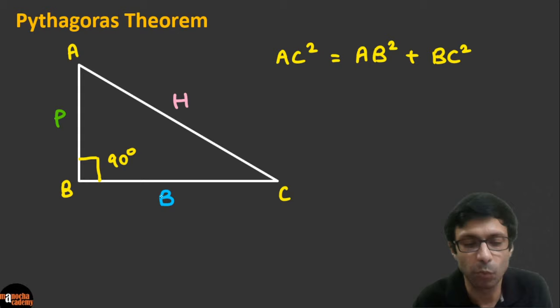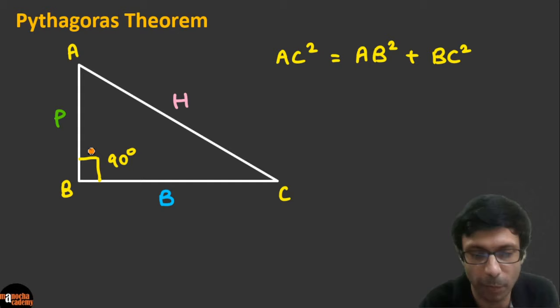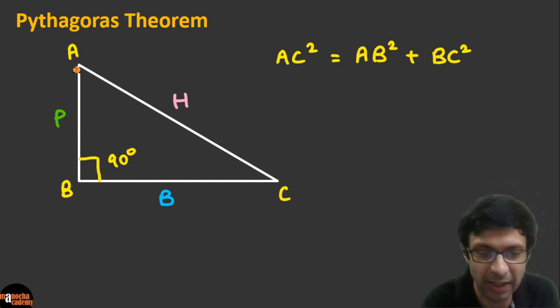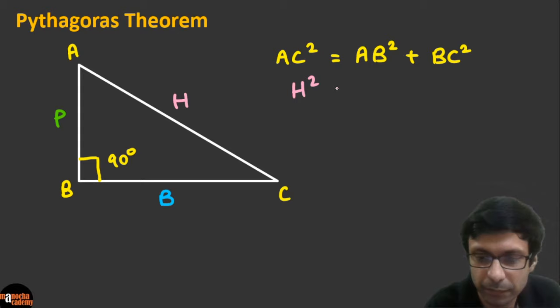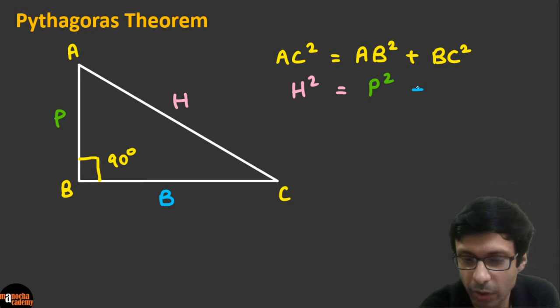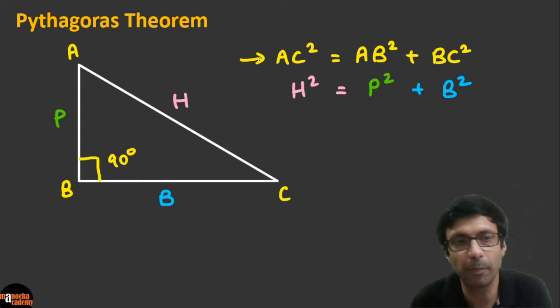The hypotenuse is the longest side and it is opposite to the 90-degree angle. The base and the perpendicular are the other two sides. We can say: hypotenuse² = perpendicular² + base², or H² = P² + B². That's one way of thinking about it in Pythagoras' theorem.